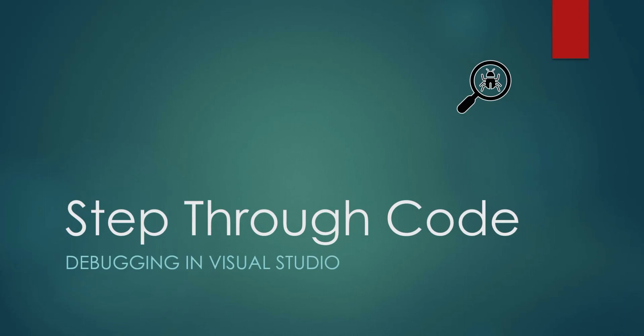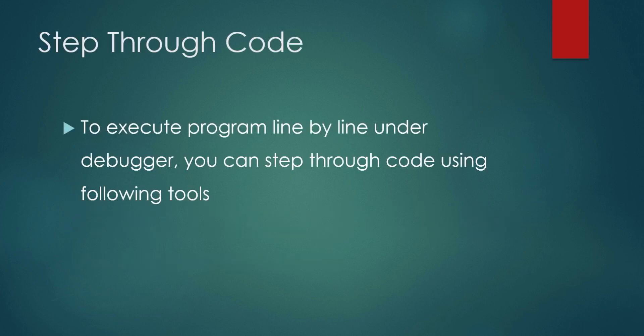Hello friends, welcome to Core Semantic. We are studying debugging in Visual Studio. From this video onward we are going to see debugging practically. This video will cover how to step through code. Step through code means you are executing the program line by line under the debugger.